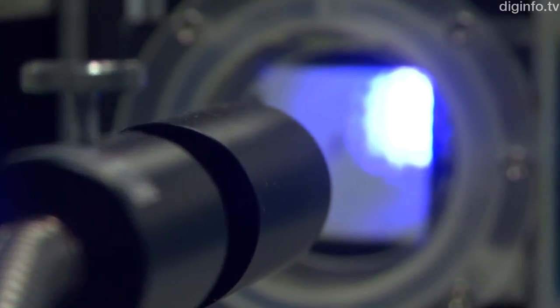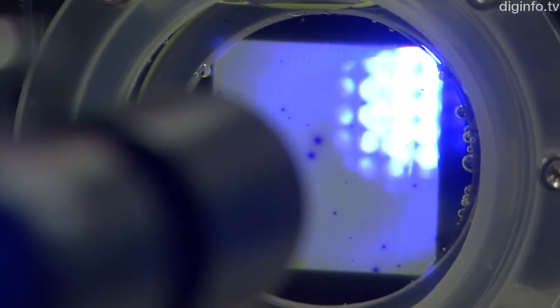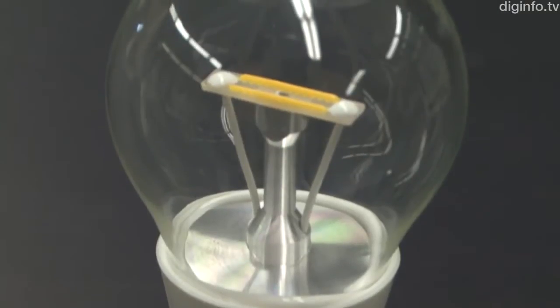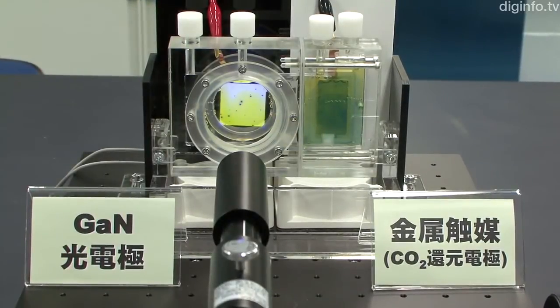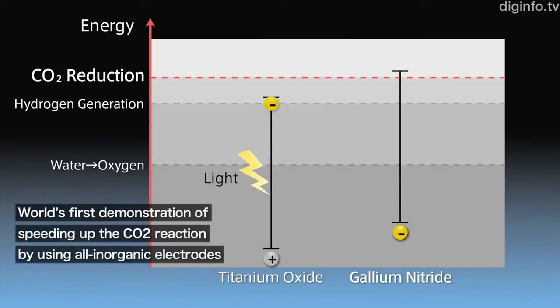To convert carbon dioxide in this way, electrons must be excited to a high-energy state using light. In the current system, Panasonic is using a nitride semiconductor, as in LED lamps, for the photoelectrode. In this way, Panasonic has discovered that electrons can be excited to the energy state required to react with carbon dioxide.